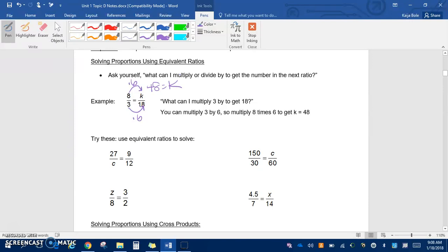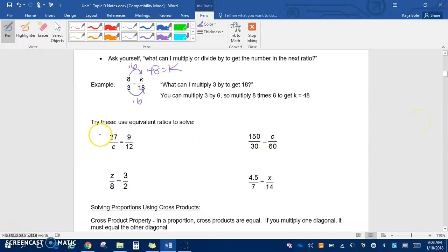For the first few examples, we're going to work on that. Remember, you always want to draw the arrows towards what you're looking for. Here we're drawing the arrows to the left. How do we get from 9 to 27? We multiply by 3, so we multiply by 3 on the bottom and get that c equals 36.